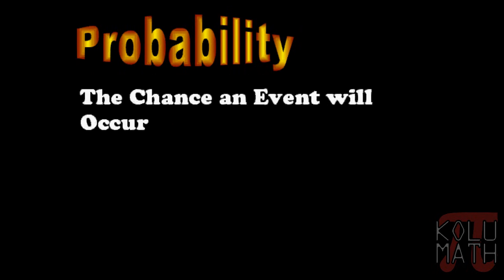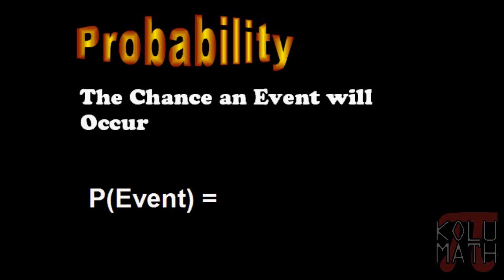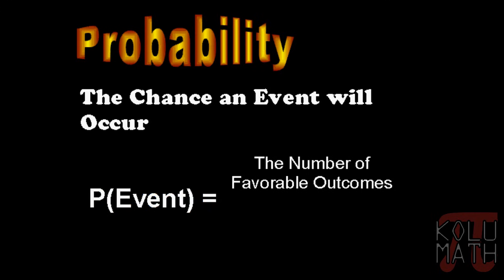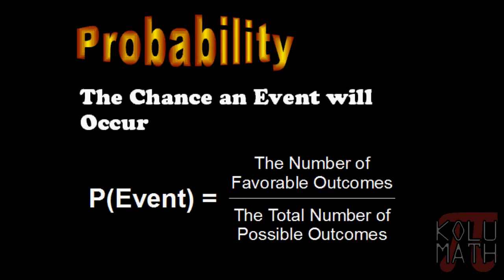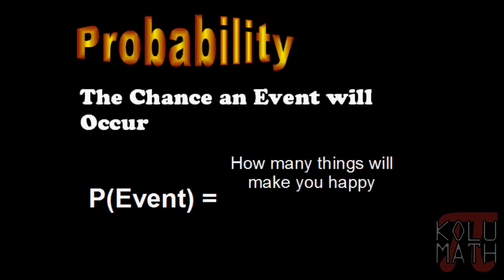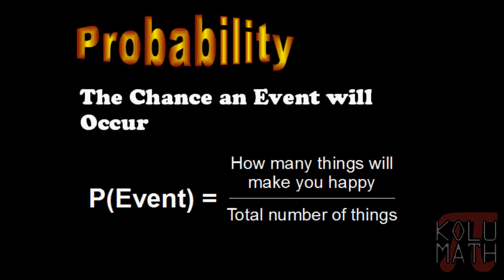Probability is the chance an event will occur. The probability of an event is the number of favorable outcomes over — and probability is always a fraction — the total number of possible outcomes. I'm going to replace that with something easier to remember: how many things will make you happy over the total number of things.